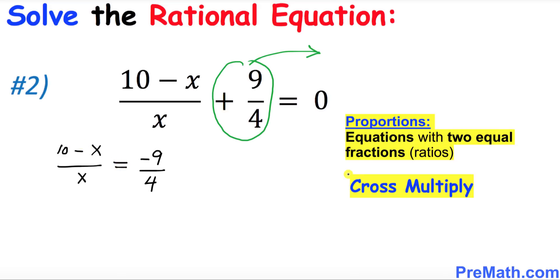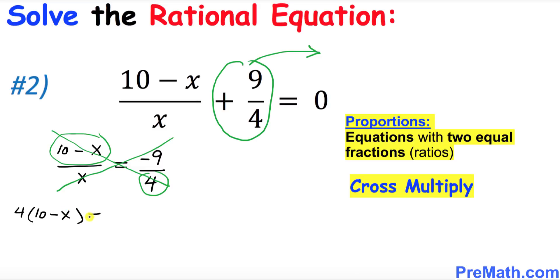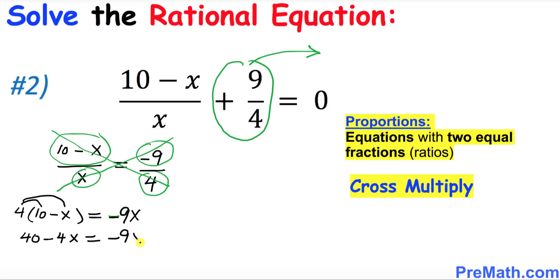We are going to solve using the cross multiplication method. Cross multiplying, we multiply 4 times 10 minus x on one side, and negative 9 times x gives us negative 9x on the other side. So we have 4 times 10 minus x equals negative 9x. Distributing, 4 times 10 is 40 and 4 times negative x is negative 4x, so we get 40 minus 4x equals negative 9x.